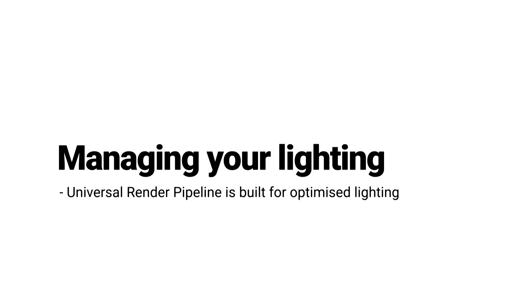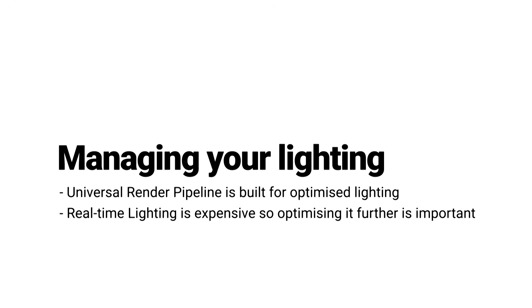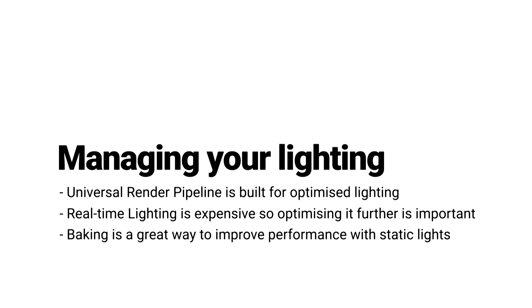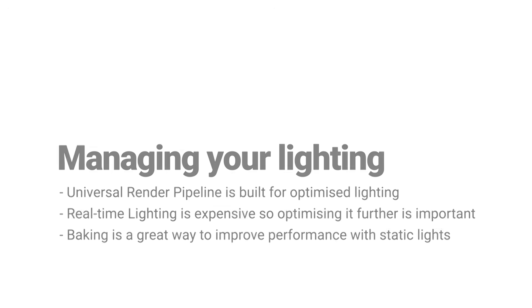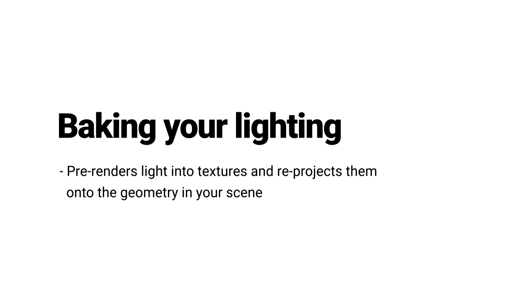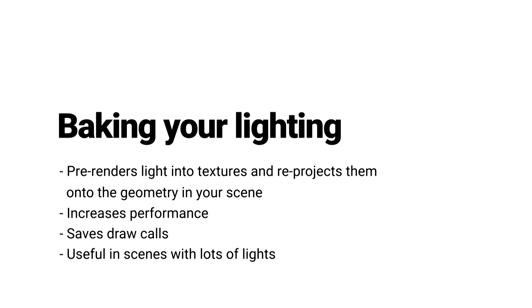However, one of the best ways to improve the performance of your scene is to bake your lighting whenever possible. Real-time lighting can be expensive, and baking your lights can be a great way to gain back performance, especially if the lights in your scene aren't going to be moving. The process of baking essentially allows lighting data in your scene to be pre-rendered into textures that are then re-projected onto the geometry in your scene. By pre-rendering your lighting data to baked textures, you can save valuable rendering time and increase the performance of your scene, as the lighting textures can be batched into a singular draw call and don't need to continuously be calculated. This is especially useful if your scene uses multiple lights.